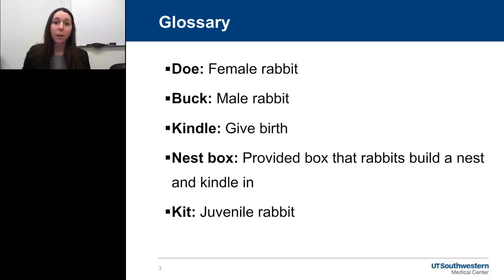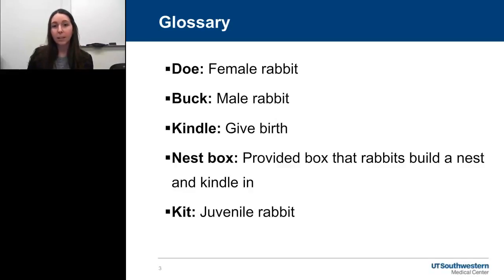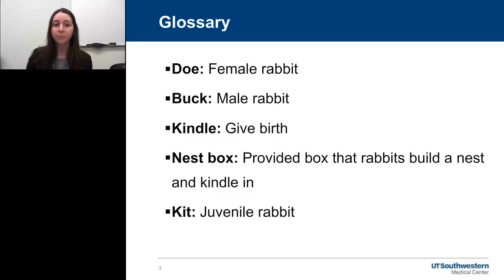Going over a little bit of glossary before we get started — these are common terms I'll be using throughout the presentation. A doe is a female rabbit. A buck is a male rabbit. Kindle means when a rabbit gives birth. A nest box is a box placed into a doe's enclosure near the time she's going to kindle, which she builds her nest into. And a kit is a juvenile rabbit.